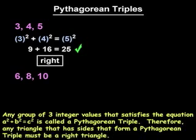Moving on, if we multiply each integer in the 3, 4, 5 triple by 3, we have 9, 12, and 15, which is another Pythagorean triple.